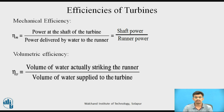The third is volumetric efficiency. The volumetric efficiency of a turbine is defined as the volume of water actually striking the runner to the volume of water supplied to the turbine.